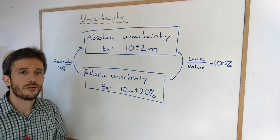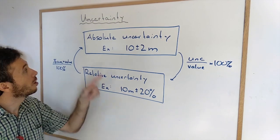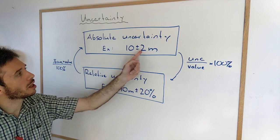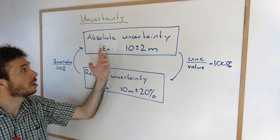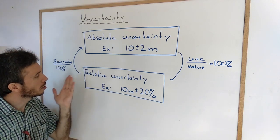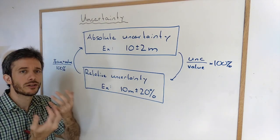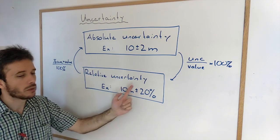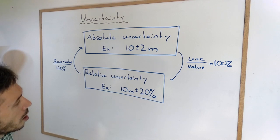There are two ways of reporting our uncertainties. One is the absolute uncertainty, where you give the uncertainty in the same unit as the value itself. For example, here 10 plus minus 2 meters. The other way of giving your uncertainty is using relative uncertainties, where you give the uncertainty itself in a percentage value. For example, 10 meters plus minus 20%.